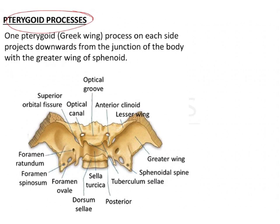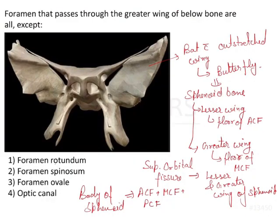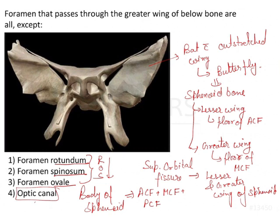Going back to the question and the four options: Foramen Rotundum, Foramen Spinosum, and Foramen Ovale — these three, using the ROS mnemonic from anterior to posterior — are all seen in the greater wing of the sphenoid. The optic canal, however, is seen in the lesser wing of the sphenoid, not the greater wing. So the answer to this question is option four — the optic canal.